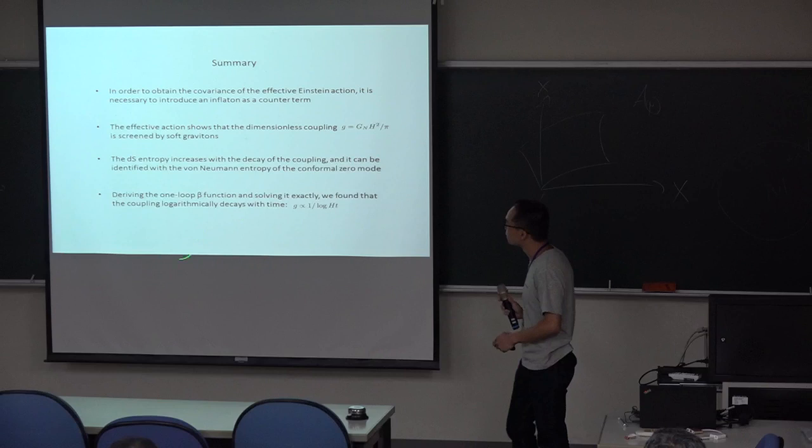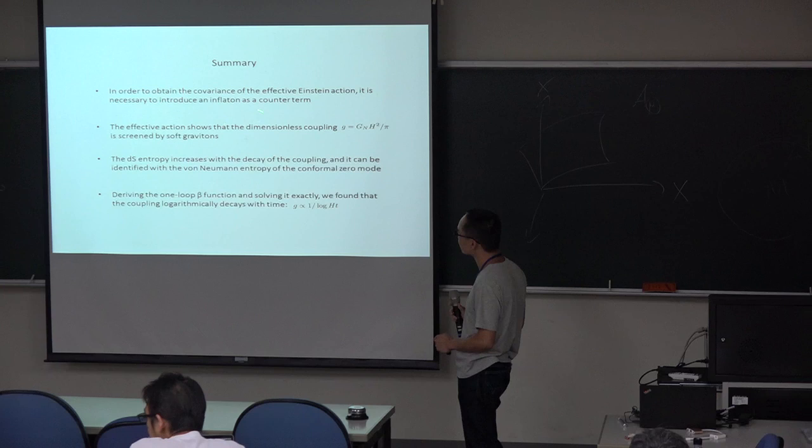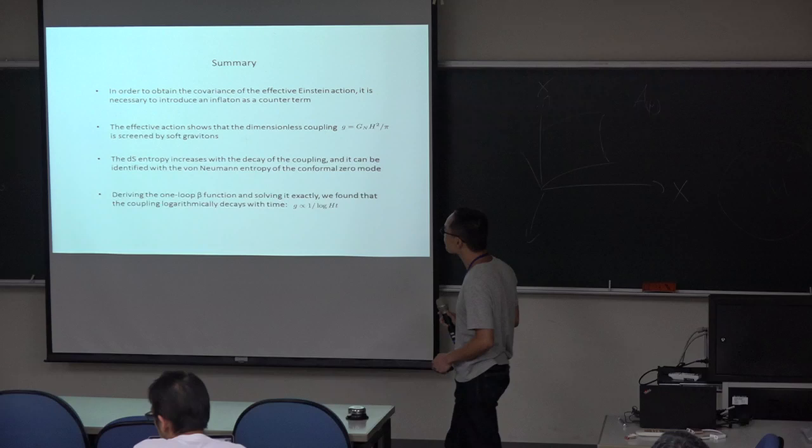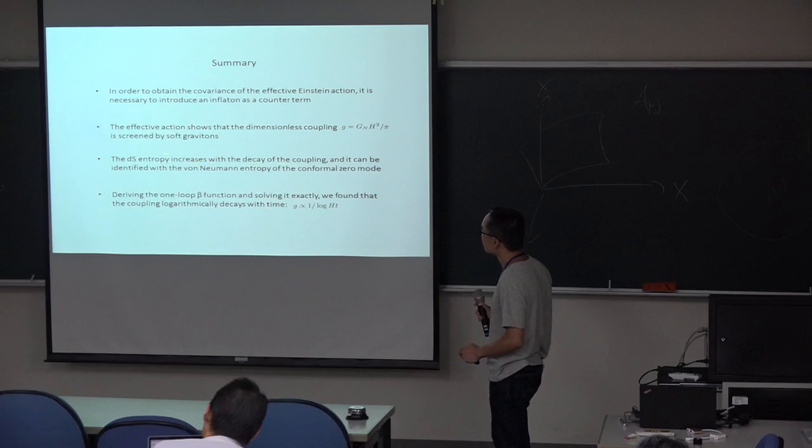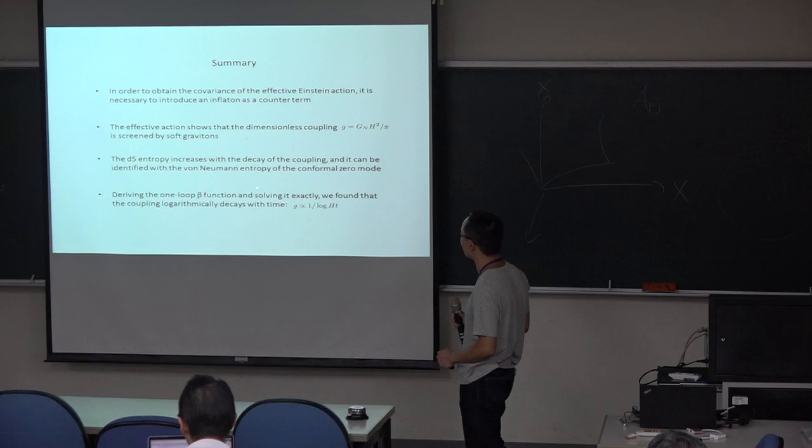So in order to obtain the covariance of the effective action, it is necessary to replace the scale factor by the inflaton counter-term. In this sense, the inflaton is naturally introduced. Note that in the starting point, there is no inflaton in the classical Einstein-Hilbert action, but the inflaton should be introduced. That's the point. And the resulting calculation shows the cosmological constant is screened by quantum effects. It's nothing but the instability of the de Sitter space.